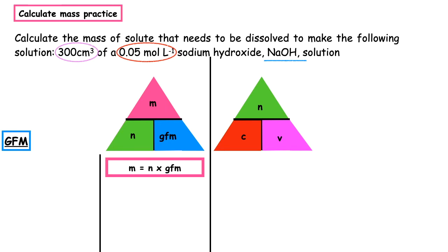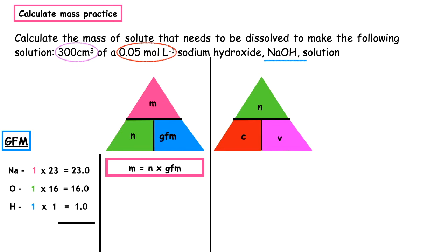How many sodiums do we have in the formula? We have one multiplied by the relative atomic mass which is 23 — one times 23 equals 23. Oxygen: one multiplied by the relative atomic mass which is 16 — one times 16 equals 16. Hydrogen: one multiplied by the relative atomic mass which is 1 — one times one equals one. When we add those up we get a GFM of 40 grams. We can substitute that into the formula.